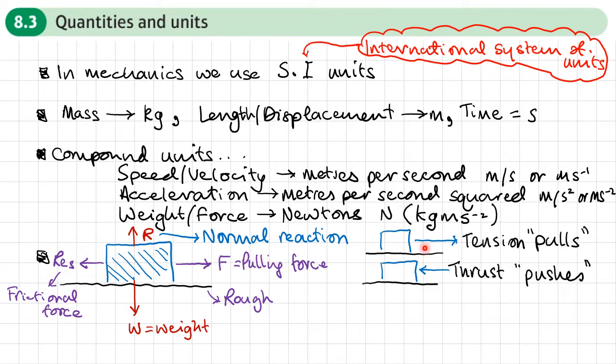Now if you've got a string pulling an object, then that creates a force called tension. So tension will be a pulling force, normally by a string or rope. And if you've got something pushing into an object, so that may be like a rod or beam, that's pushing into an object and causing it to move, then that's called thrust. So tension pulls, thrust pushes.